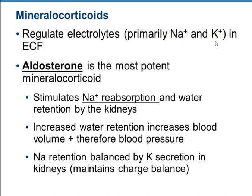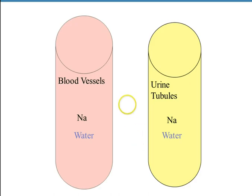What happens when aldosterone gets released is that the kidneys detect aldosterone, and it causes them to increase the amount of sodium that gets retained in the bloodstream. I have added a couple of slides just to try and illustrate the way this works. So in your kidneys, you have urine being formed in what we call tubules, and there are always blood vessels in close association to these tubules. There's always a certain amount of sodium and water in both the urine and the bloodstream.